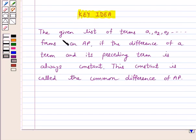We know that the given list of terms a1, a2, a3 and so on forms an AP if the difference of a term and its preceding term is always constant. This constant is called the common difference of AP.